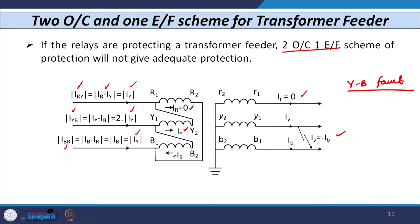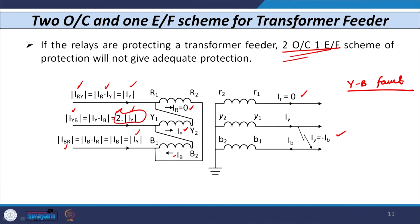You can see that a Y-B fault occurs, and we have removed the phase unit from Y phase, yet in Y phase the magnitude of current is 2 times the normal current. So 2 times the magnitude of IY flows in the Y phase from which we have removed the unit. There are chances of delayed operation, and our objective is to achieve instantaneous operation as soon as a fault occurs. This is not possible with the two overcurrent, one earth fault scheme instead of the three overcurrent, one earth fault scheme.